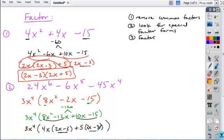I have this common binomial factor, so that comes out. I have my 3x to the fourth, my common binomial factor of 2x minus 3, and then my remaining binomial factor is going to be formed by these leftover factors of 4x plus 5.